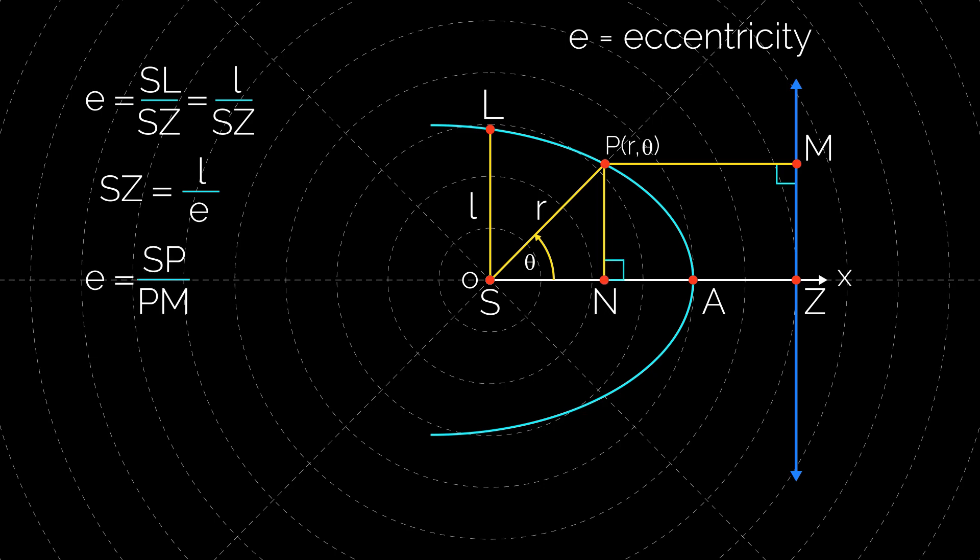Also e = SP/PM, so SP = e times PM which is equal to e times NZ, which is equal to e times (SZ - SN). So r = e times (L/e - r cos θ). Thus l/r = 1 + e cos θ.